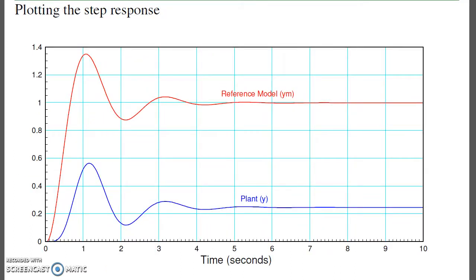If I look at the step response, what I'll see is the reference model is how I want the plant to behave. This is how it actually behaves for step input. The tracking isn't great, but this is the optimal. That's what LQR does - it gives you the optimal.